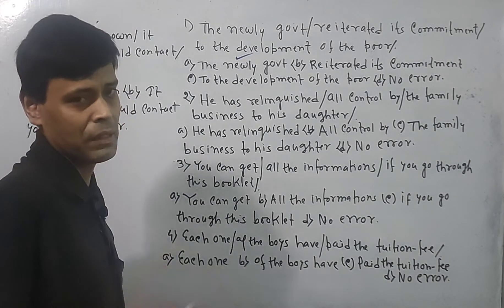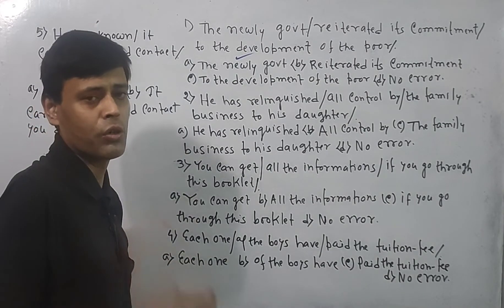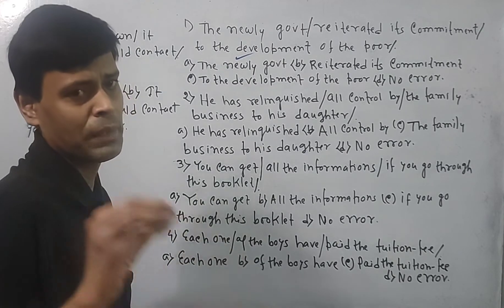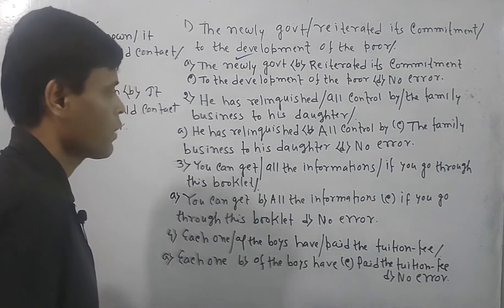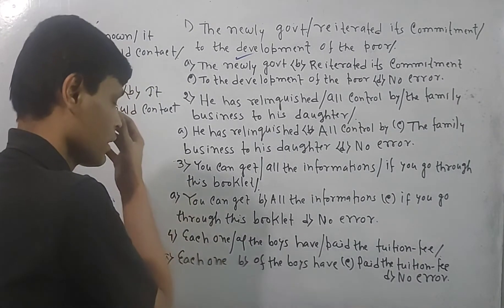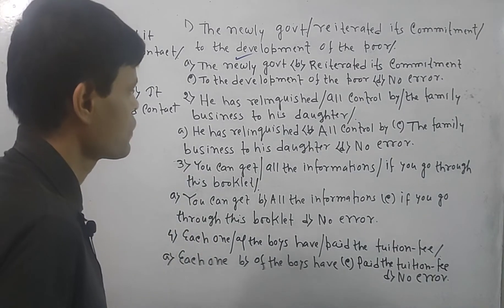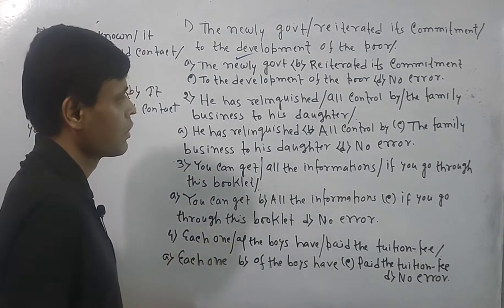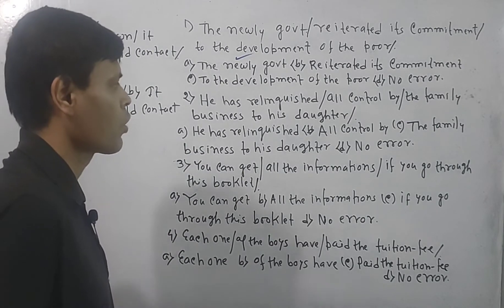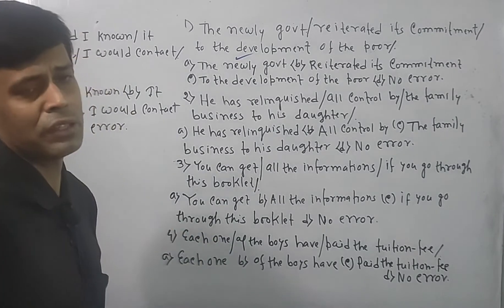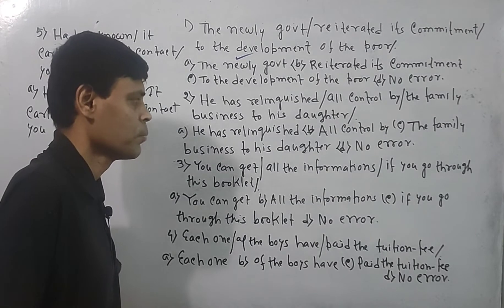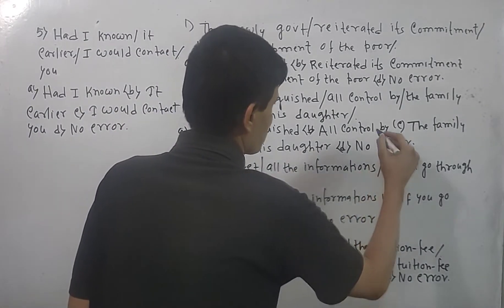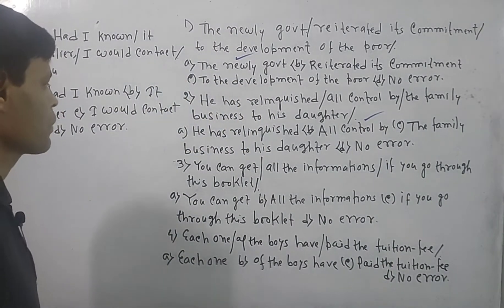Whenever you use a word like 'control,' generally after that we place the preposition 'over,' because 'over' functions as the preposition of controlling or dominance in some cases. So after 'control,' we place the preposition 'over.' Looking at the sentence again: 'he has relinquished all control by the family business to his daughter' — after 'control' we place 'over.' The right answer is 'he has relinquished all control over the family business to his daughter.' The error lies where 'by' is used — it should be 'over.'